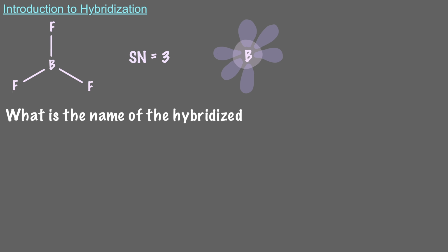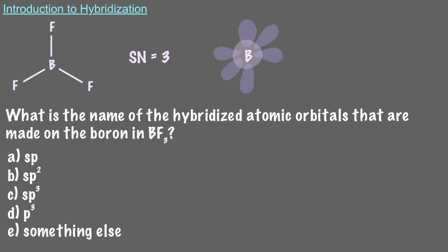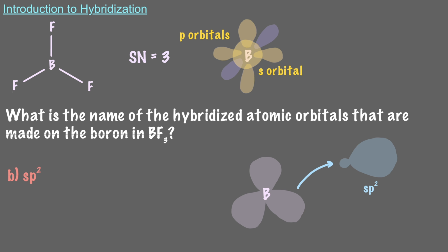What is the name of the hybridized atomic orbitals made on the boron in BF3? Since boron has steric number 3, we'll need three atomic orbitals. So we combine the three lowest energy valence orbitals — one s orbital and two p orbitals — to form three sp2 hybrid orbitals. Notice that in this case, one of the p orbitals remains unhybridized. In our methane example, we used all three p orbitals, so we had no unhybridized p orbitals remaining.